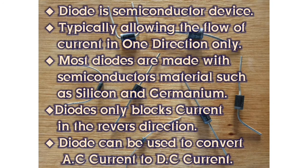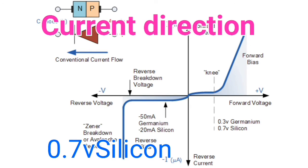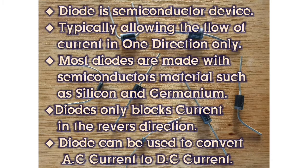Diode is a semiconductor device, typically allowing the flow of current in one direction only. Most diodes are made with semiconductor material, such as silicon and germanium. Diode only blocks current in the reverse direction.